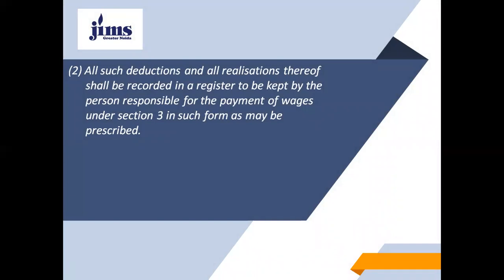Apart from these deductions, there are certain deductions for services rendered under Section 11, and deductions under clause d and clause e of subsection 2 of Section 7. Clause d covers deductions for house accommodation supplied by the employer, by the government, or by any housing board set up under any law. Clause e covers deductions for such amenities and services supplied by the employer as the state government or any specified officer may authorize. Deductions for recovery of advances can also be made under Section 12, as well as deductions for recovery of loans under Section 12.